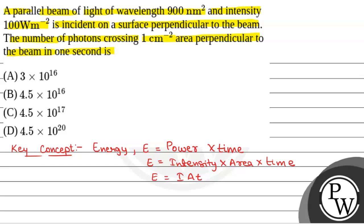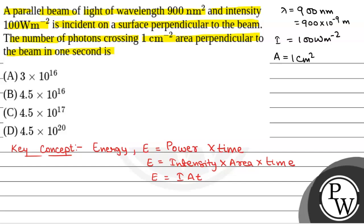We have been given wavelength of light that is 900 nanometer, which will be equal to 900 into 10 to the power minus 9 meter. Also, we have been given intensity that is equal to 100 watt per meter square, area that is 1 centimeter square — equal to 10 to the power minus 4 meter square — and time that is given as 1 second.